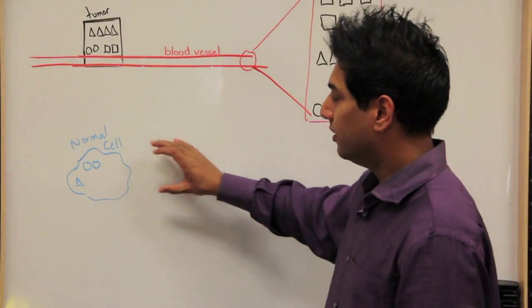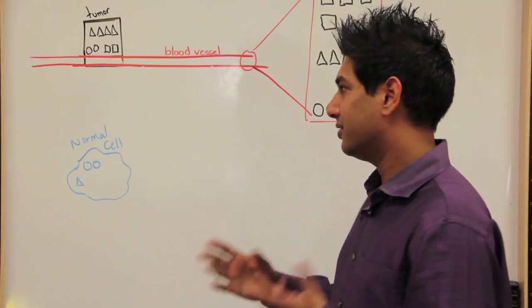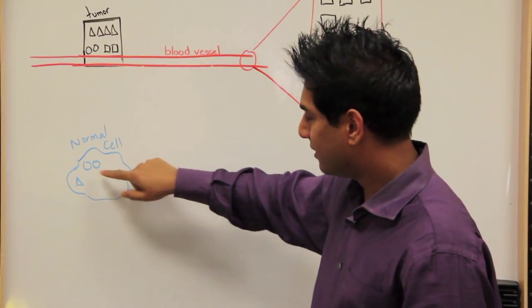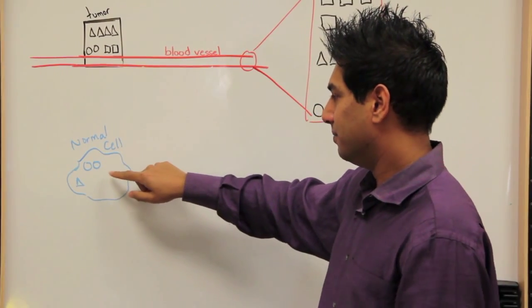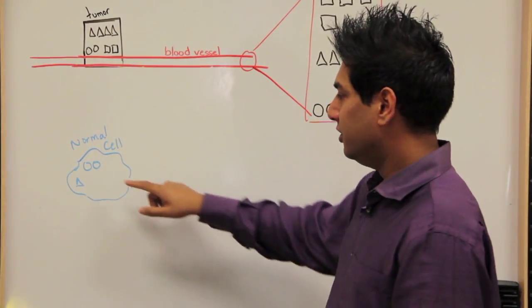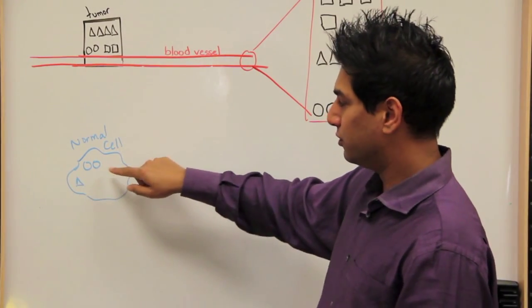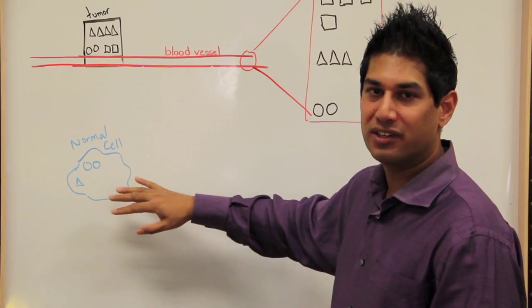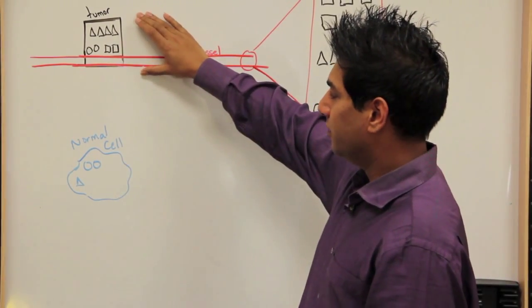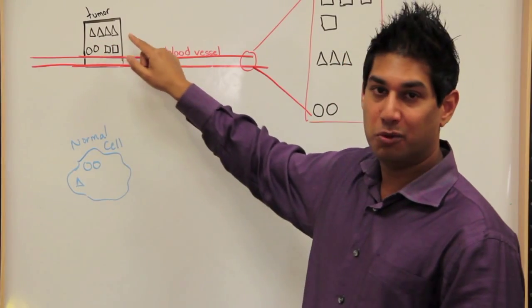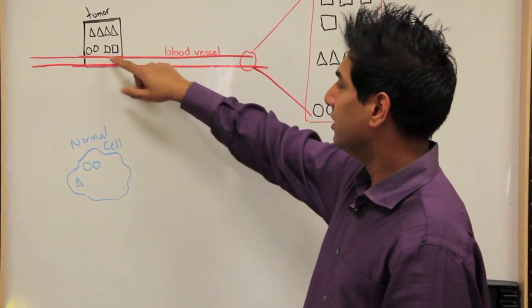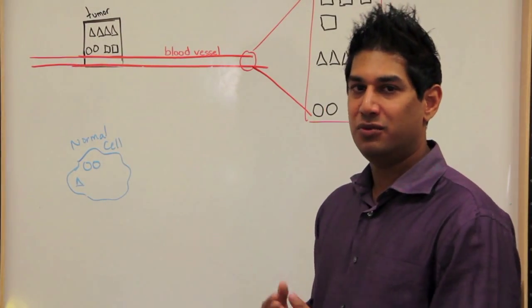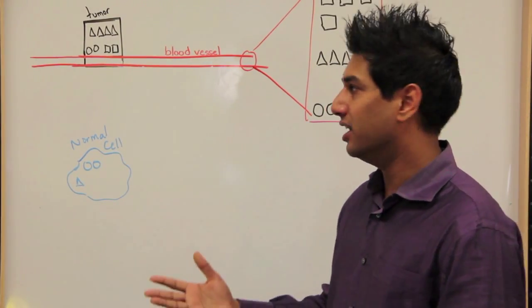So for the first step of telling the difference between a healthy cell and a cancer cell, if we look at, I have a cartoon of a healthy cell here. And inside each of these little circles and triangles represent proteins. And you can see this normal cell has maybe two circle proteins and one triangle protein. And that's most of the normal cells in your body. But if we look at the tumor cell, we can see that it has a lot more of the triangle proteins. And it also has these square proteins. And so if we were trying to ask the question, what's different between a healthy cell and a tumor cell? We might say,